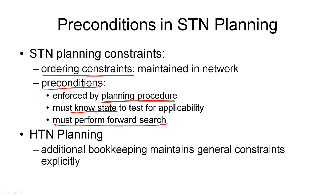In HTN planning, we try to take a more general approach. HTN planning does not deal with a specific type of ordering constraints or a specific representation for preconditions, but maintains general constraints explicitly as part of the representation. This will require additional bookkeeping, but it means we are much more flexible. If we want to have a different type for ordering our network, then we can plug a different constraint management system into our HTN planner. Similarly, other types of constraints we want to handle can be included in our representation as part of a general constraint network having different types of constraints.